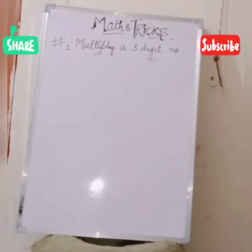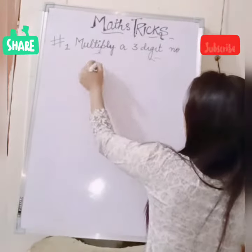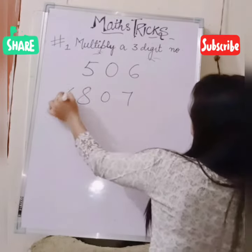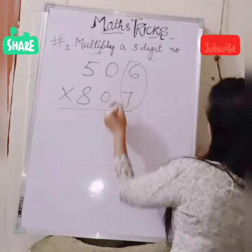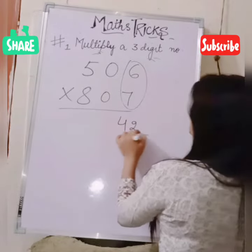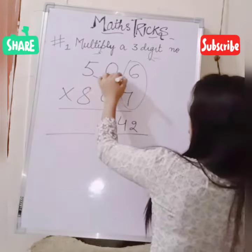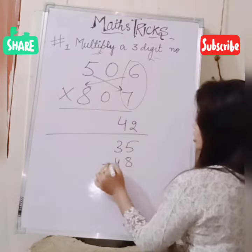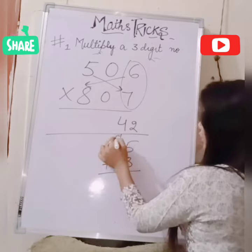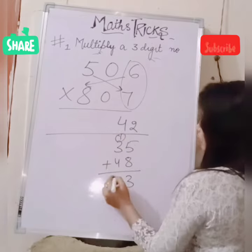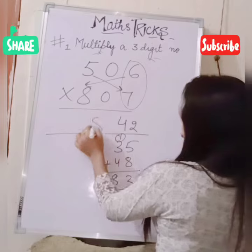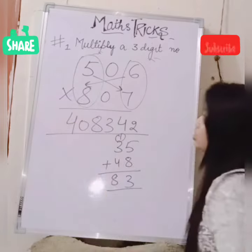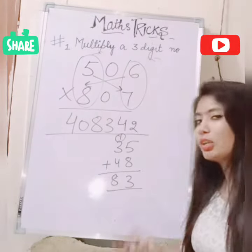Now we multiply 506 into 807. First, 6 times 7 is 42. Then cross multiply: 5 times 7 is 35, and 8 times 6 is 48 — add both terms: 35 plus 48 is 83, carry the 1, so we get 83. Then 8 times 5 is 40. So like this you can easily multiply your 3-digit number.